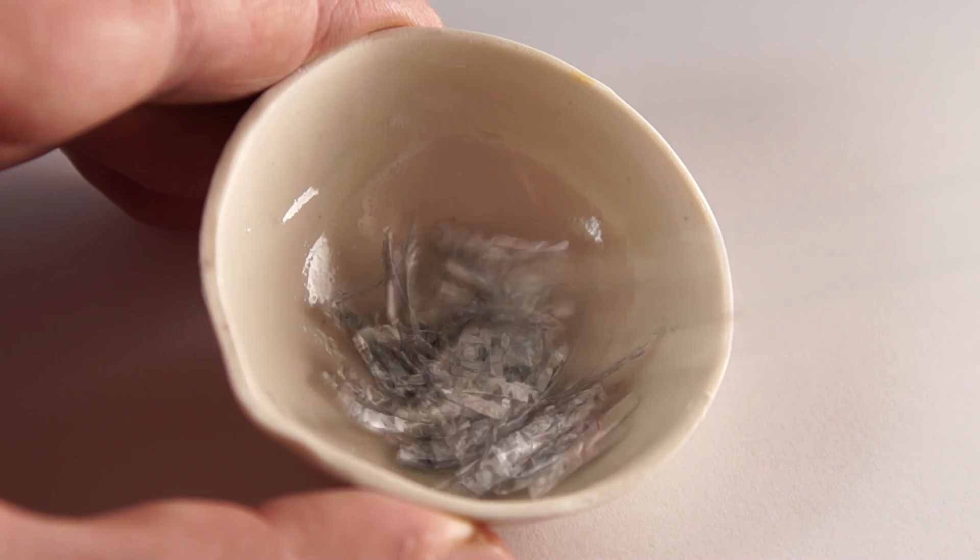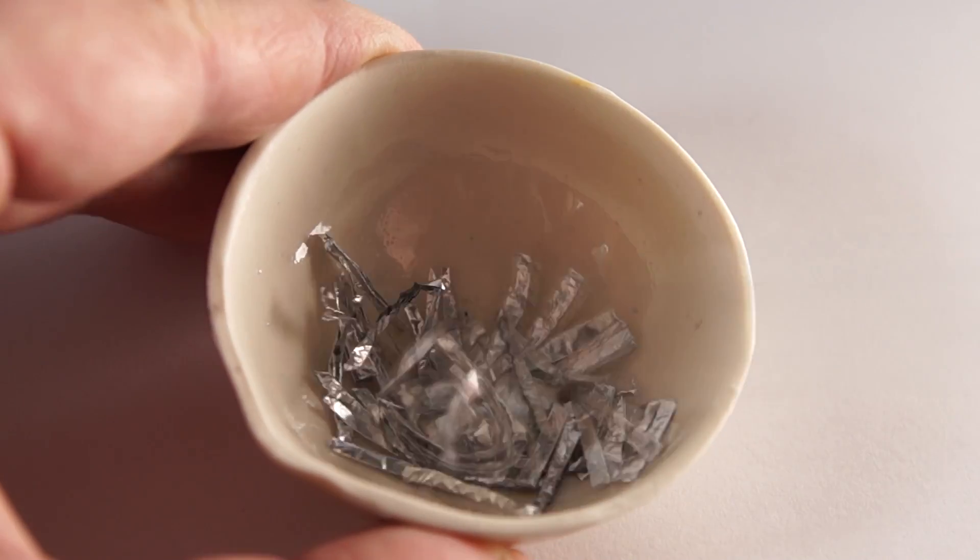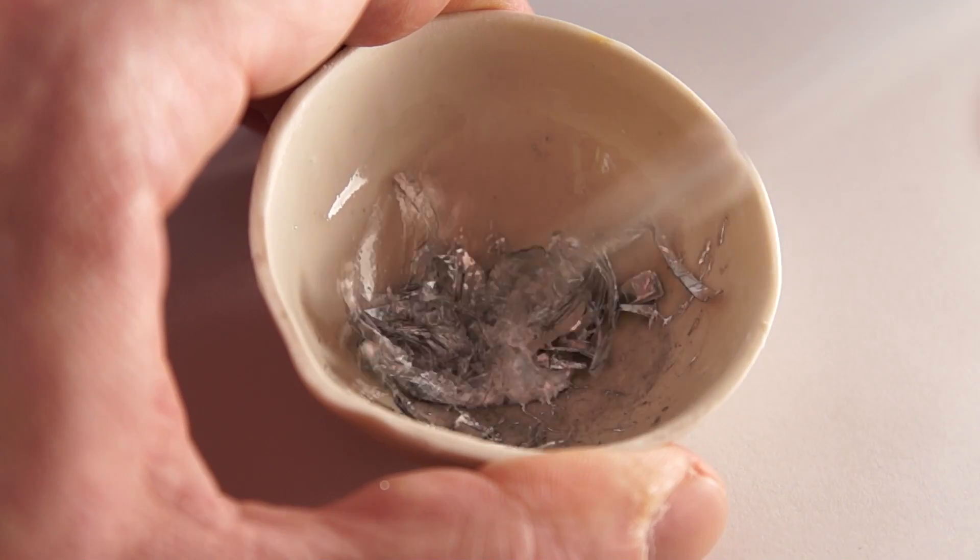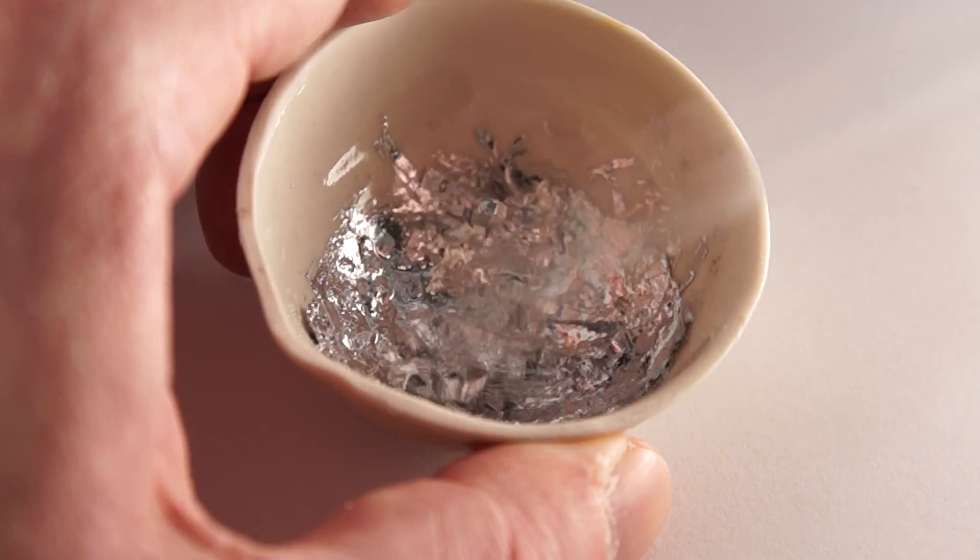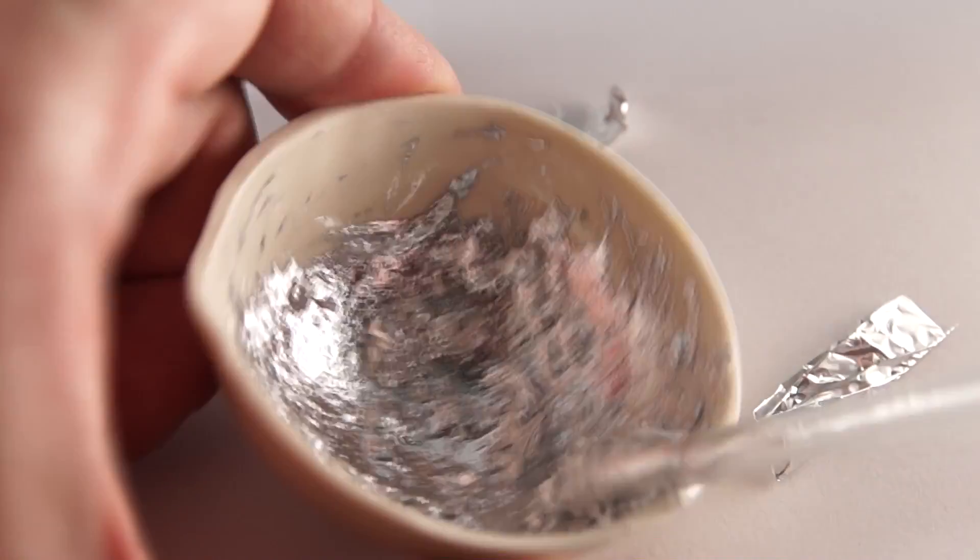Over time, you will notice that aluminum begins to dissolve in gallium and foil turns into a silver slurry. This paste is an amalgam of aluminum and gallium which has an unusual property.